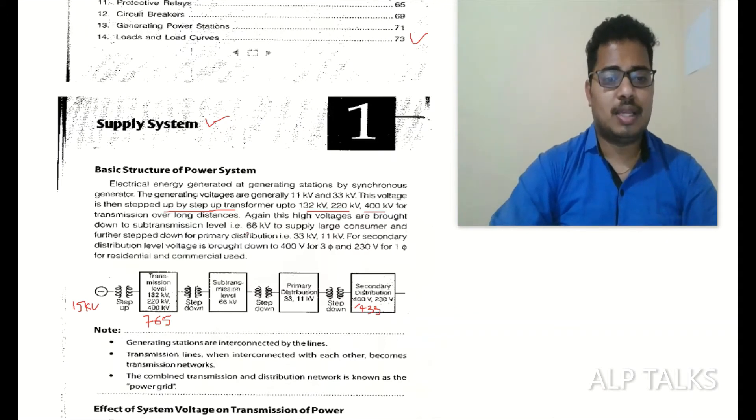These high voltages are brought down to sub-transmission level, that is 66 kV, to supply large consumers and further stepped down to primary distribution, that is 33 kV to 11 kV. For secondary distribution, level voltage is brought down to 400 volts for three phase and 230 volts for single phase for residential and commercial usage.